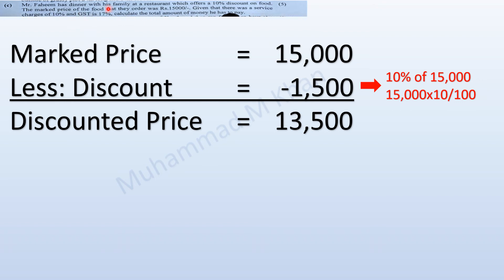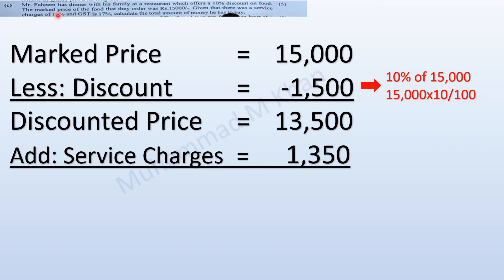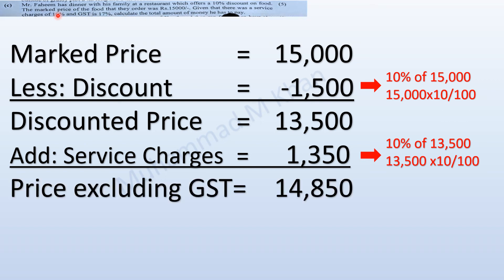The restaurant also charges a 10 percent service charge. To calculate the service charges, we multiply 13,500 by 10 and divide by 100, giving us 1,350. Adding 1,350 to 13,500 gives us 14,850, which is the price of the food item excluding GST.